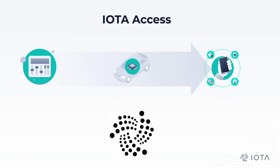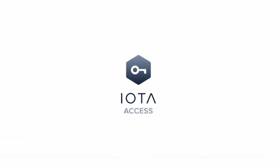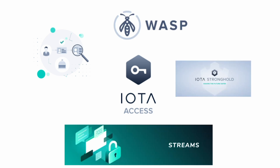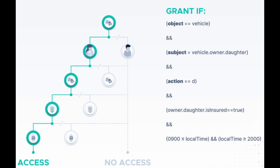IOTA Access is a lightweight access control framework tailored for resource-constrained settings, such as embedded devices and the infrastructure in which they are used. With binary access control policies tied to decentralized identities, smart contracts, strong-held files and data streams, IOTA Access encodes sets of logical outcomes for physical and digital access control of a machine.